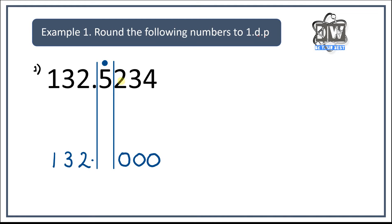If the number to the right of the column is five or more — five, six, seven, eight, or nine — the number in the column goes up by one, because we round up. If that number is four, three, two, or one, then the number in the column stays the same. In this example the number is two, so it stays the same. Now, would I write the trailing zeros in the answer? No, because the value does not change whether I write them or not. So the answer is 132.5.